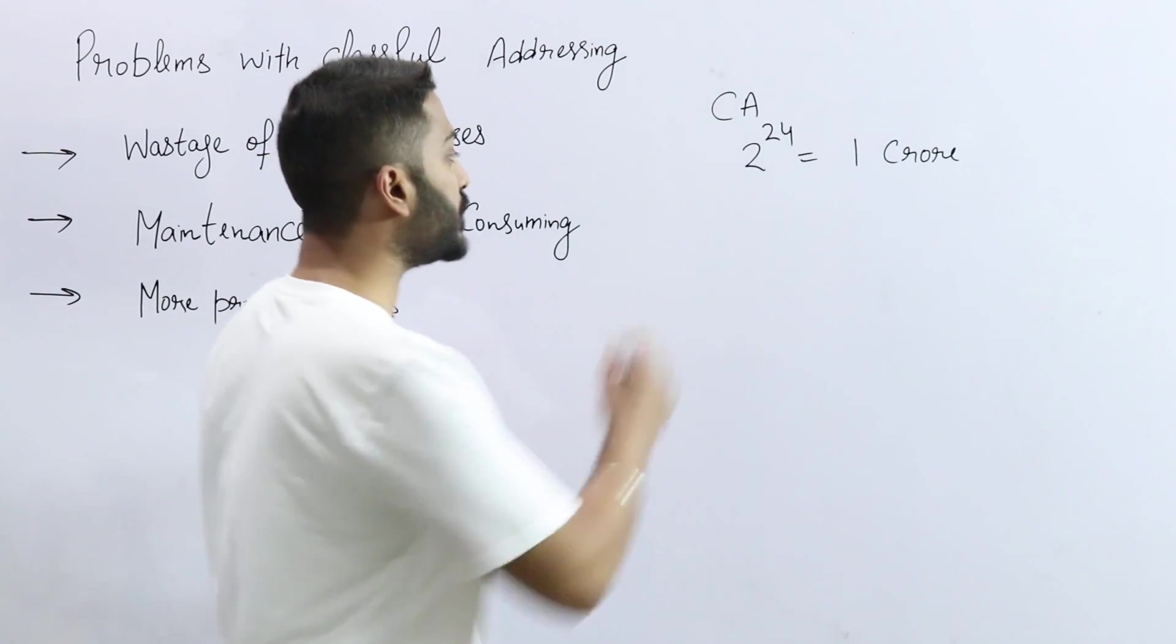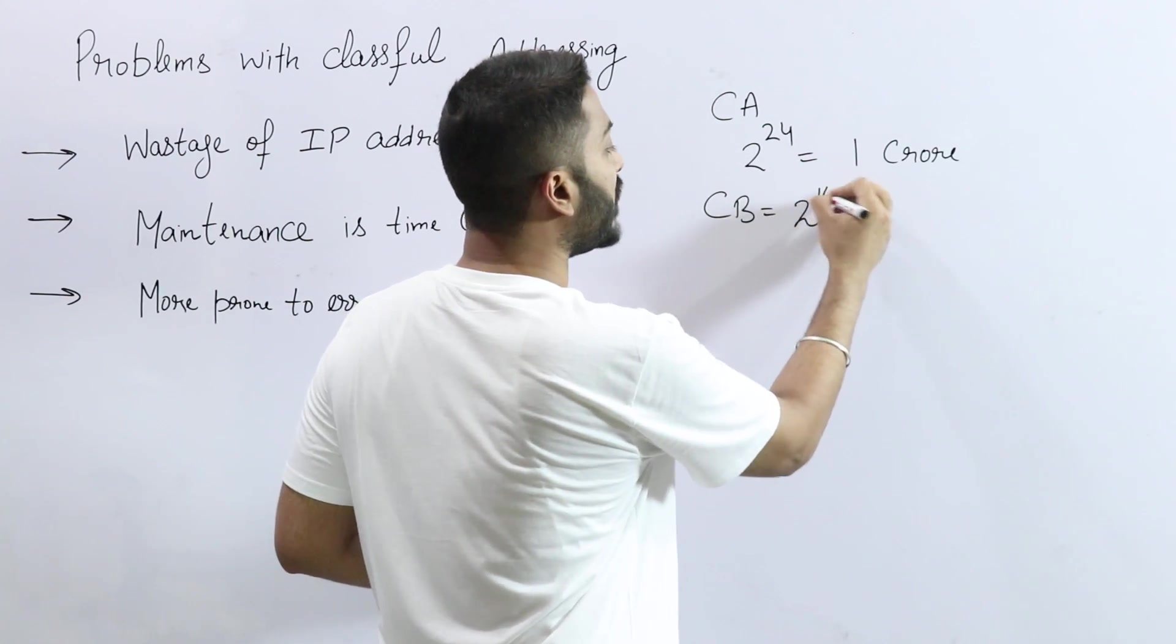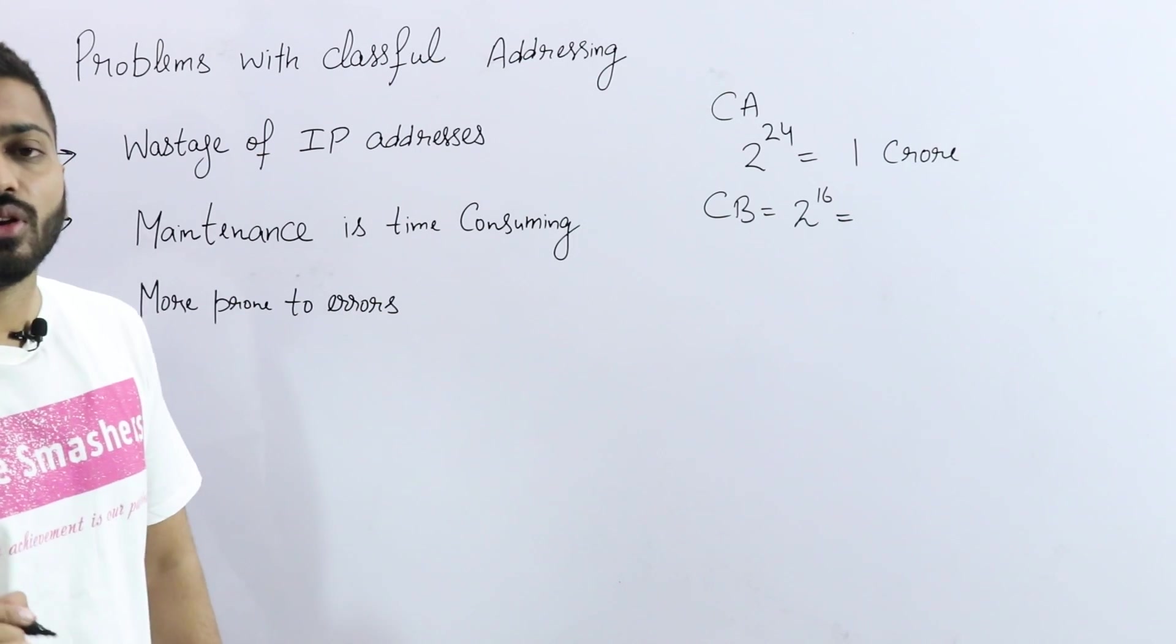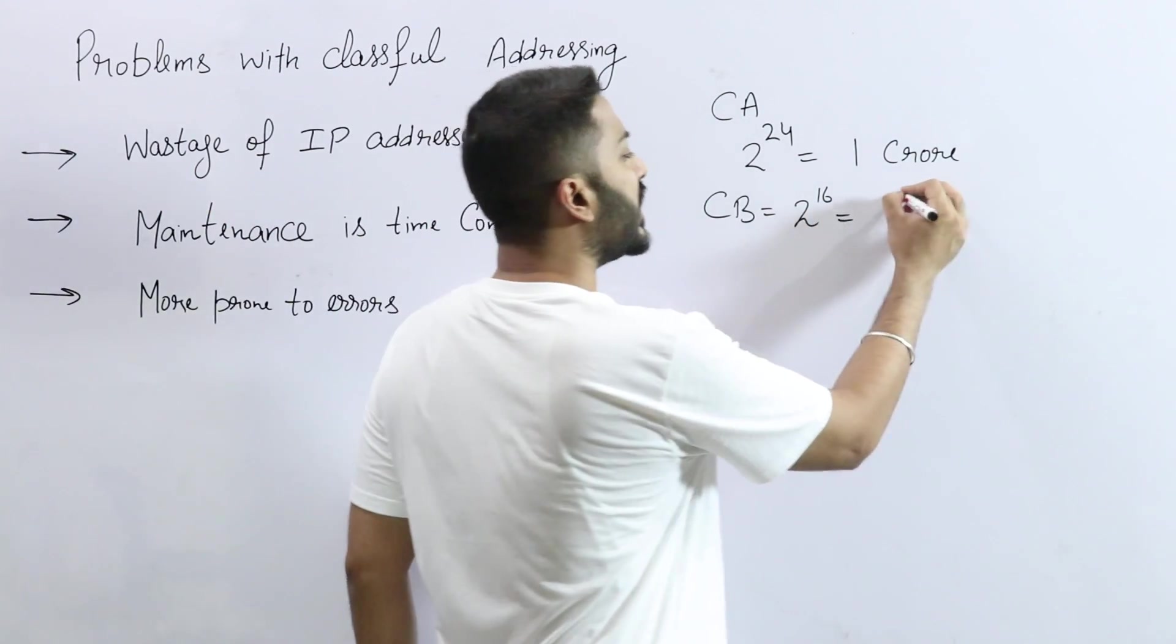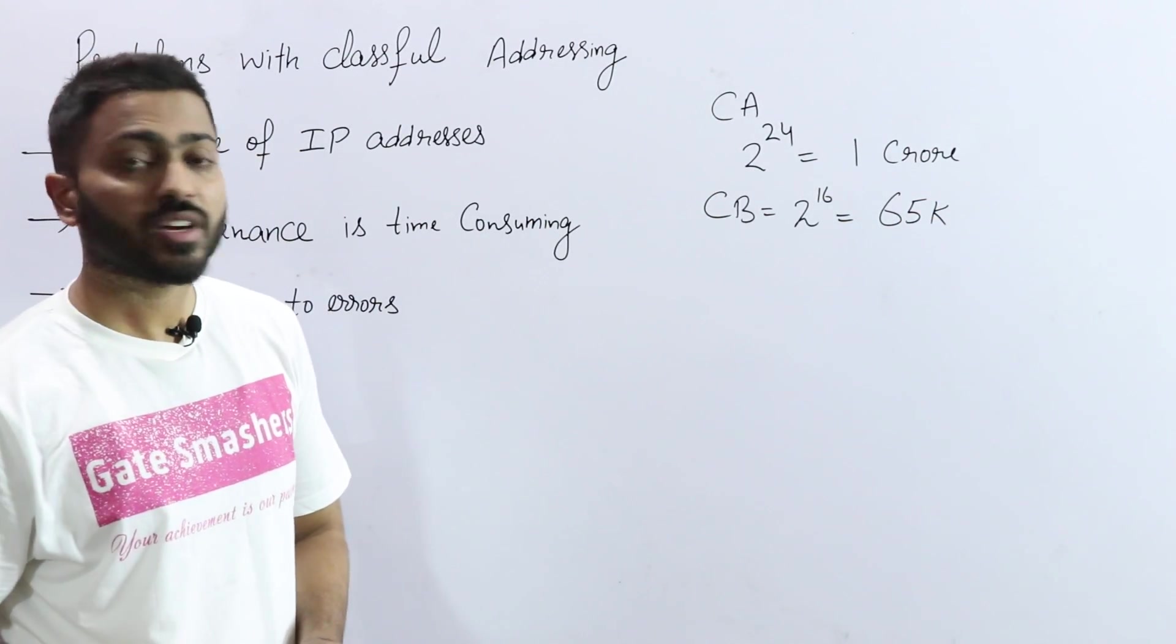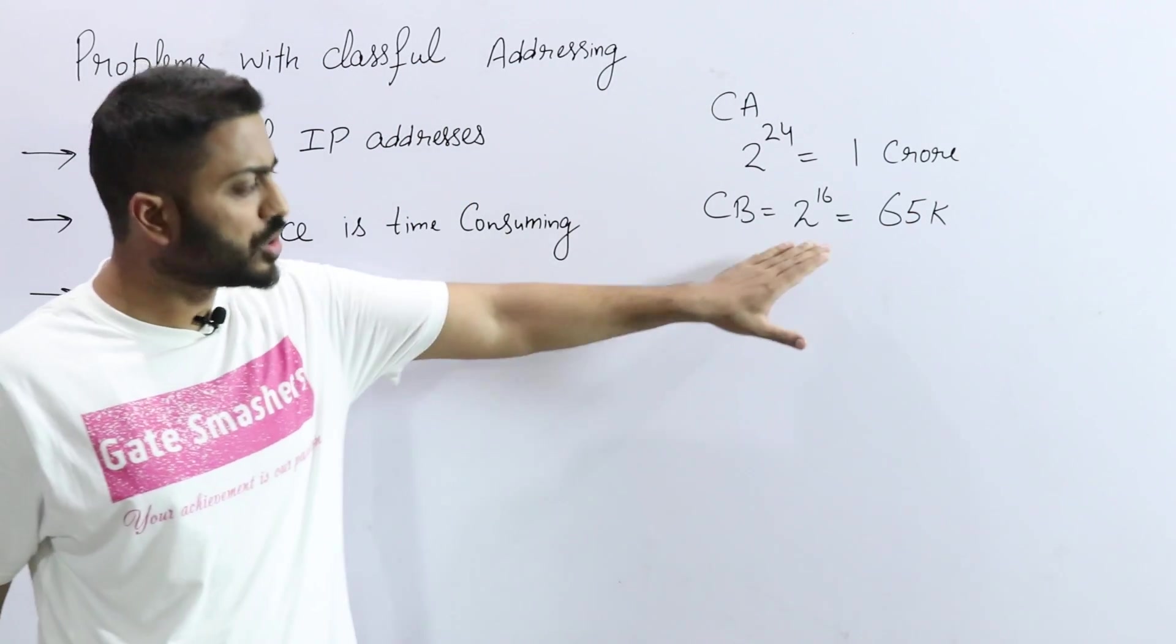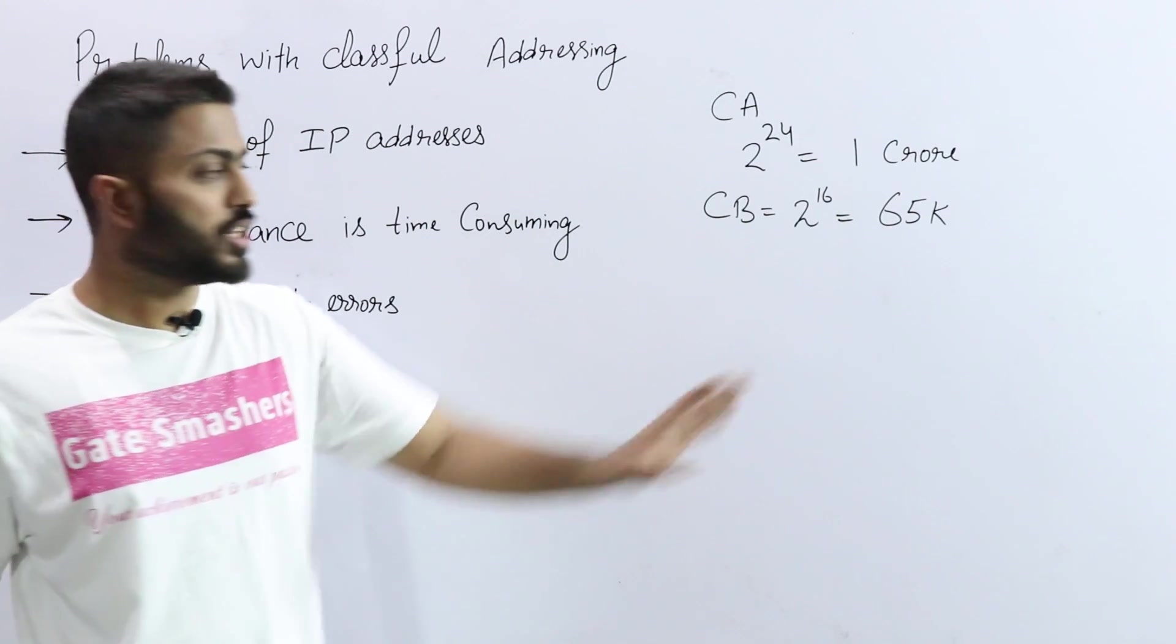If I talk about class B, there are 2 raised to power 16 number of hosts in every network, which is approximately 65,000. Now, 65,000 is also a very huge value, but it is moderate, meaning there are a lot of organizations which can use this.